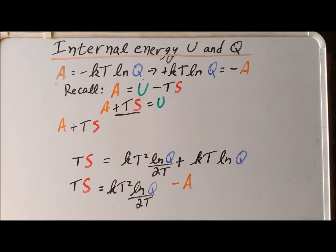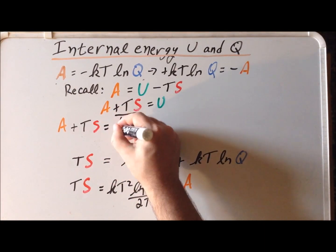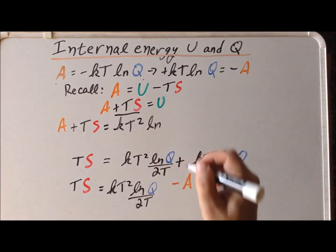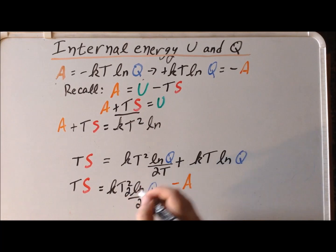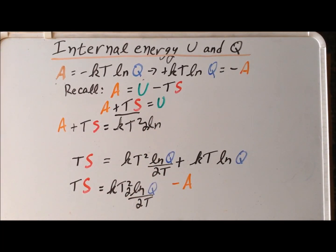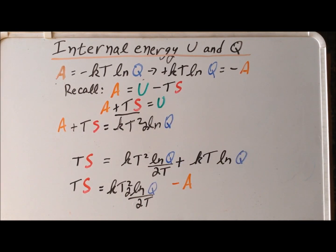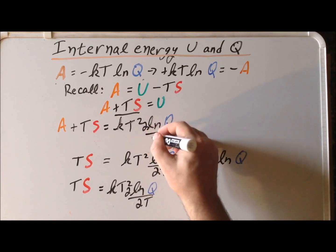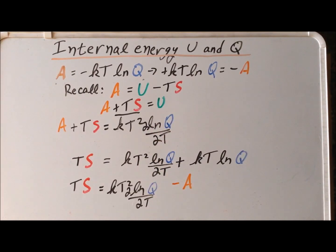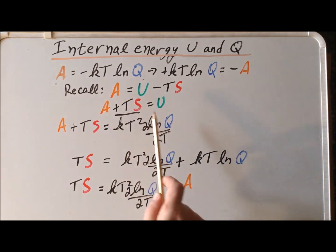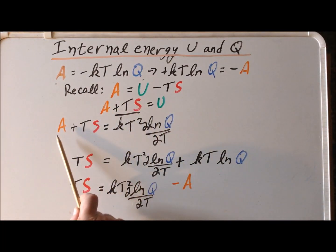And this is equal to the Boltzmann constant K times the temperature squared times the derivative of the natural log of Q with respect to the temperature. Now we compare this result to our recollection that we can rearrange the equation such that the A plus TS term is simply equal to the internal energy.